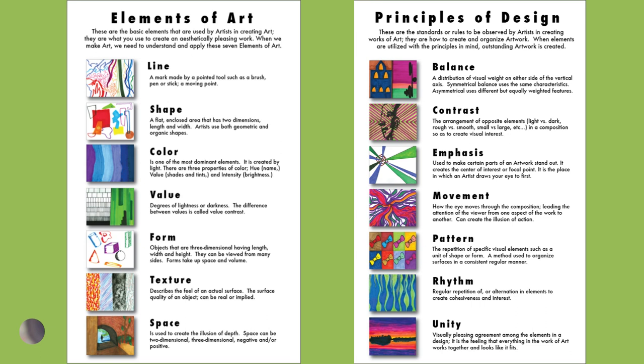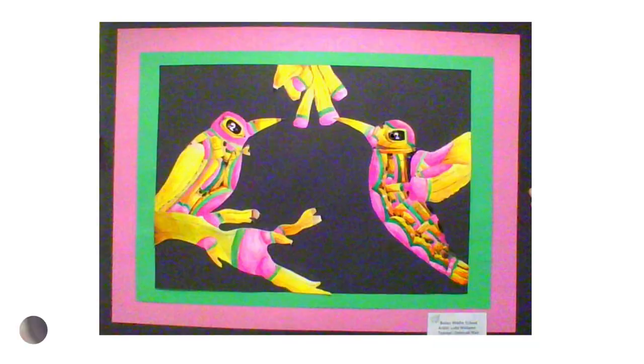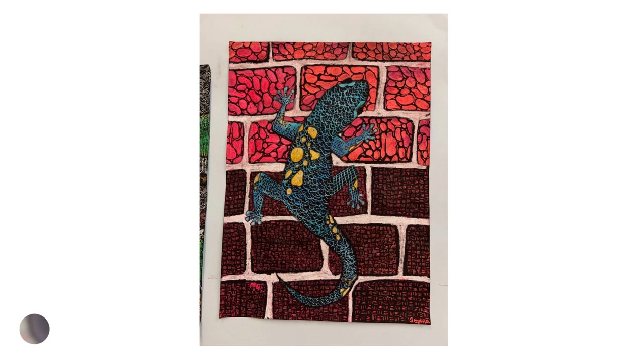All of our assignments include the elements of art and the principles of design. This is a way of organizing artwork into the different areas of line, shape, color, value, form, and texture. This painting is an example showing line design, color, and value.